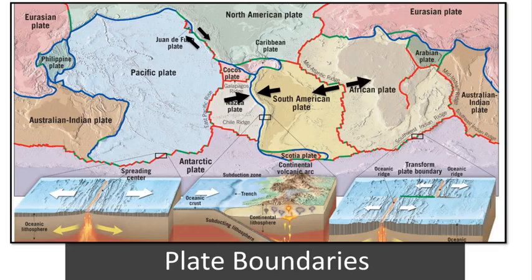The interaction of the plates along plate boundaries explains why the rocks of Earth's crust are deformed by stress. Divergent boundaries produce tensional stress, convergent boundaries produce compressional stress, and transform boundaries produce shear stress. In reality it's more complicated, because all three stresses can exist at any one of the three plate boundaries depending on factors such as the shape of the plate boundary or the direction of plate movement.